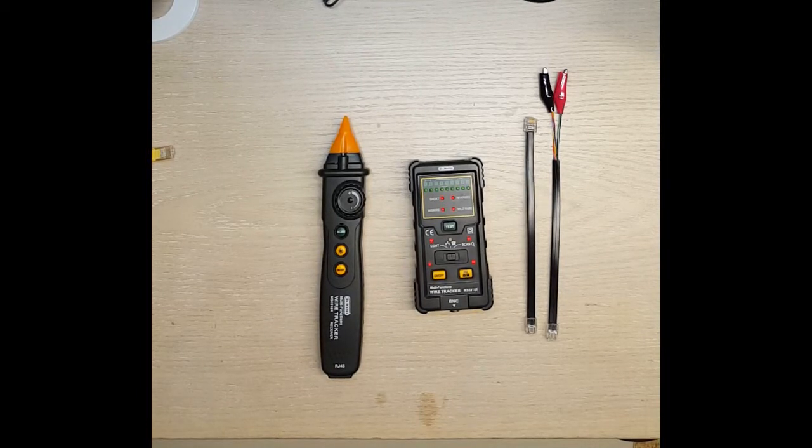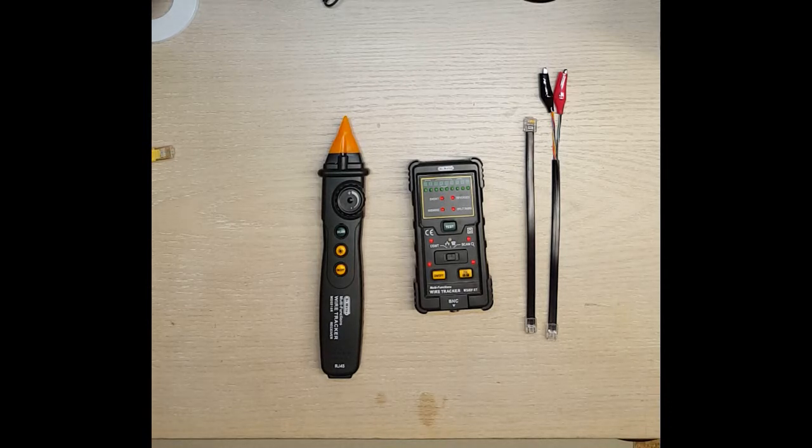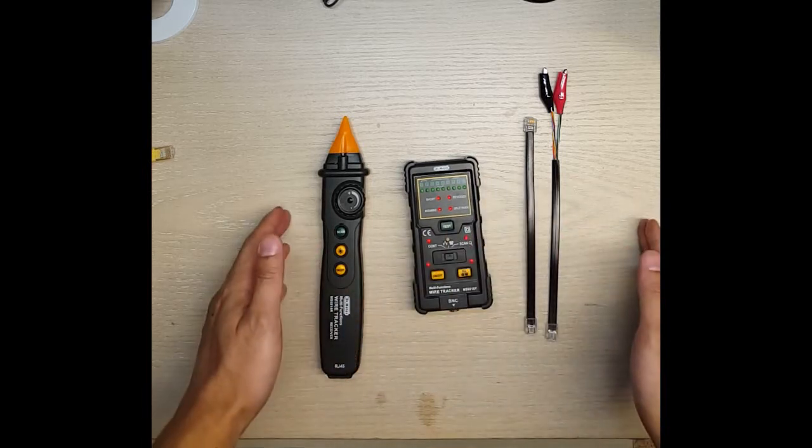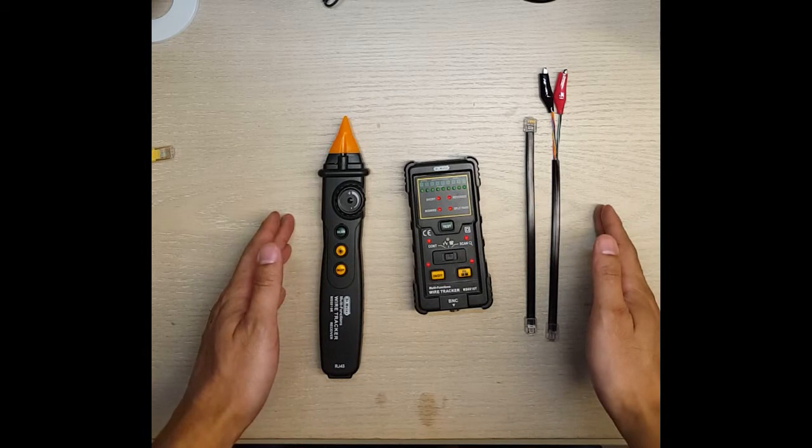This review is for the Dr. Meter MS6818 Handheld Network Line Tracker for RJ45, RJ11, and BNC coaxial cable testing. It comes with all these items that you see here.